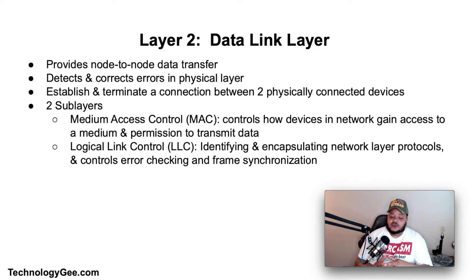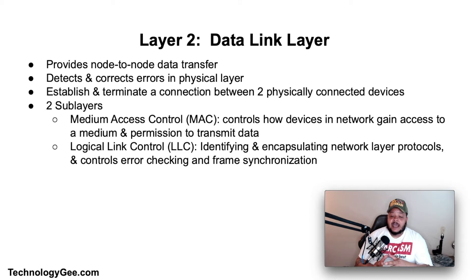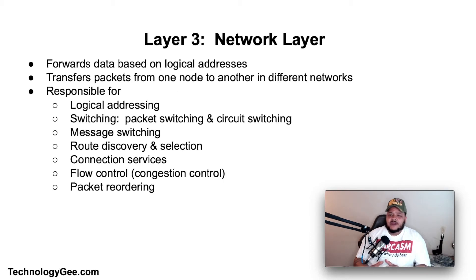The first sub-layer is the Media Access Control (MAC) layer, responsible for controlling how devices in the network gain access to a medium and permission to transmit data. The second is the Logical Link Layer, responsible for identifying and encapsulating network layer protocols, and controls error checking and frame synchronization.